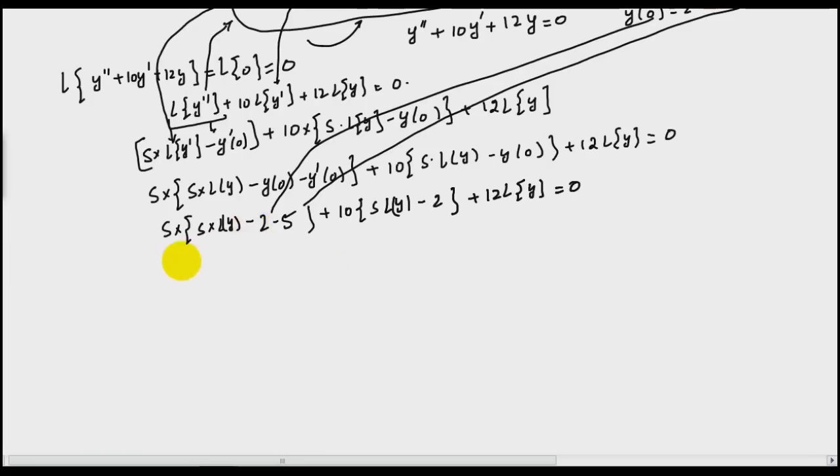Now simplify it. What you will get: s square Laplace of y minus 7s plus 10s Laplace of y minus 20 plus 12 times Laplace of y. And this equals 0. Now simplify it again further.